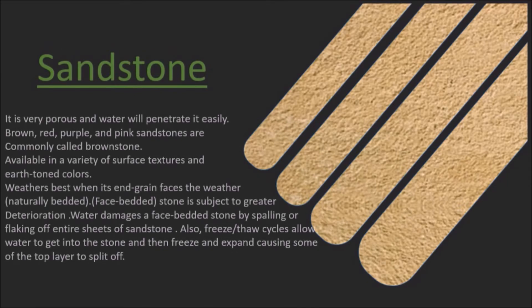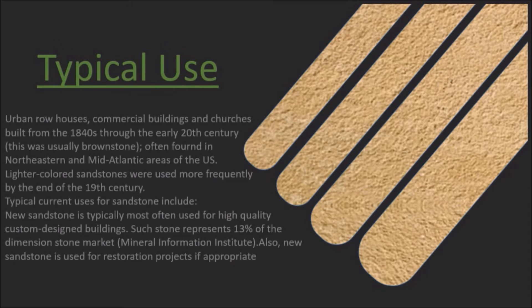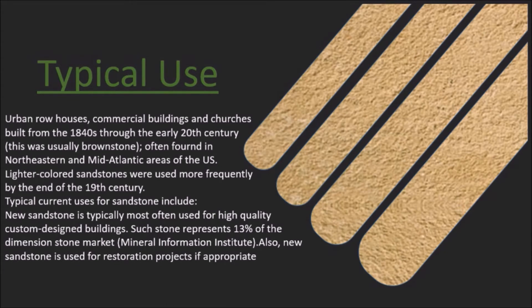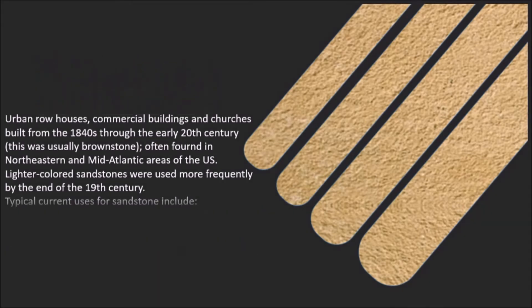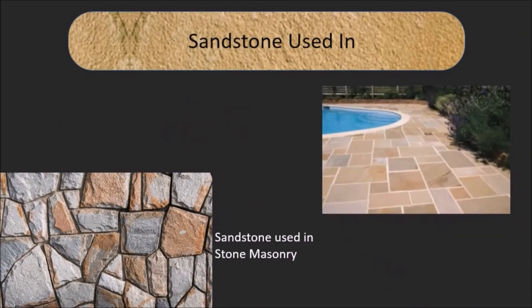Sandstone is porous and can be penetrated by water very easily. Brown, red, purple, and pink colored stones are commonly termed as brownstone. Typical uses of sandstone include urban row houses, commercial buildings, and churches built from the 1840s through the early 20th century. Sandstone is commonly found in the northeastern and mid-Atlantic areas of the US, and is used in stone masonry, paving, and benches.